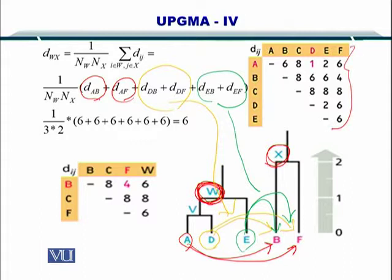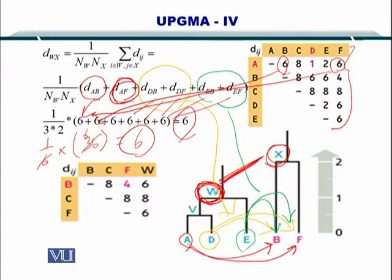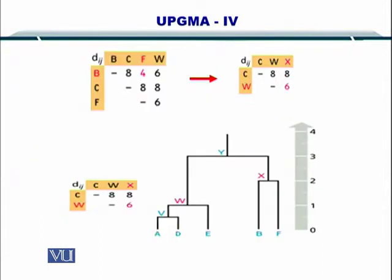The value for each one of this distance is provided in our distance matrix, and you can simply read off the distance between A and B is 6. The distance between A and F is 6. And you continue filling this up. So 1 over 6 multiplied by 36, this is equal to 6. So this is your final distance between X and W. You create the axis till 3 and you join this at 3.